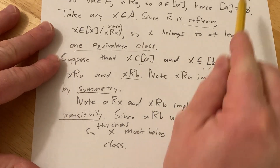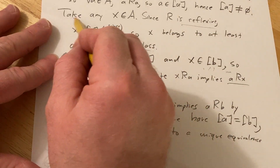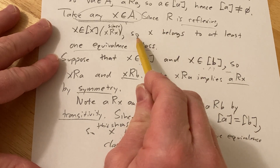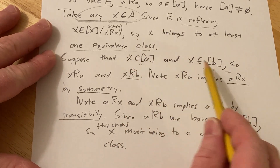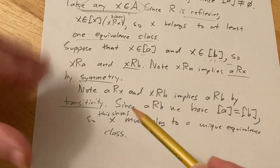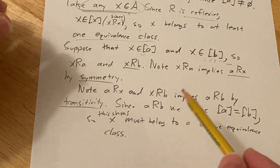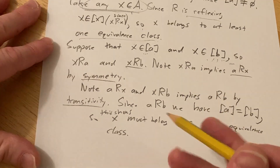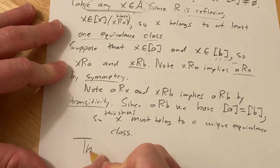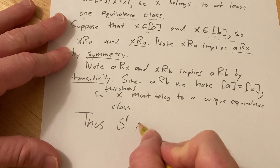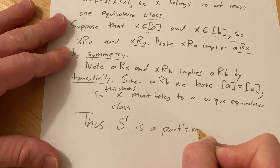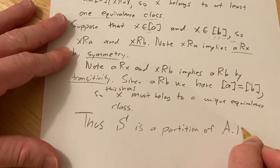So every element in A — because we took any x in A — we showed that it belongs to at least one equivalence class, and then we showed that if it belongs to two equivalence classes, they must in fact be the same. Therefore x belongs to exactly one and only one equivalence class. And that shows that this is a partition of A. Thus, the equivalence classes form a partition of A, and that completes the proof.